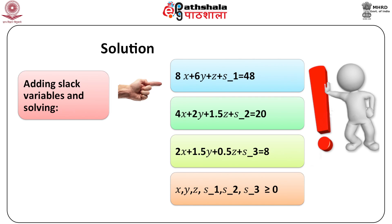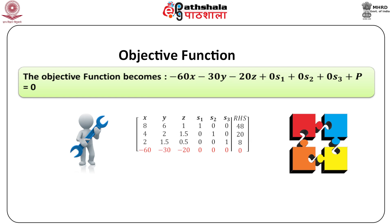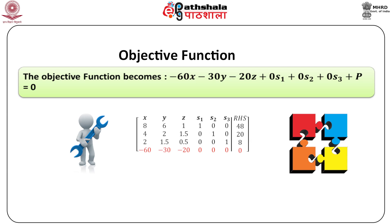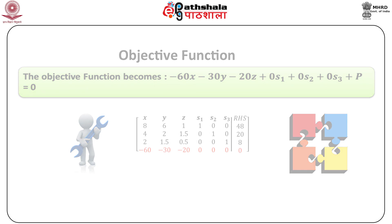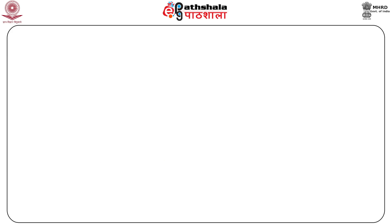Where x, y, z, s1, s2, s3 are all greater than or equal to 0. The objective function becomes minus 60x minus 30y minus 20z plus 0s1 plus 0s2 plus 0s3 plus p equals 0. Putting this in matrix form as indicated, and pivoting to the final tableau, the optimal solution is x equal to 2, y equal to 0, z equal to 8, and the objective function value is 280.